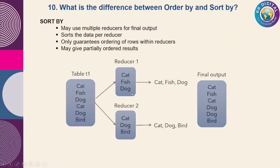SORT BY always gives partial results because multiple reducers are involved and each reducer applies sorting on its own data separately. SORT BY only gives correct results if your entire data is in only one mapper and only one reducer. It only guarantees ordering of rows within each individual reducer, not across all reducers.